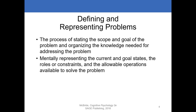When we talk about defining and representing problems, it's the process of stating the scope and goal of the problem and organizing the knowledge needed to address it. This comes down to cognition — mentally representing the current and goal states. We figure out in our own minds what the rules and constraints are, and we think about the allowable operations to solve the problem, because whenever you run into a problem you're often constrained in certain ways.